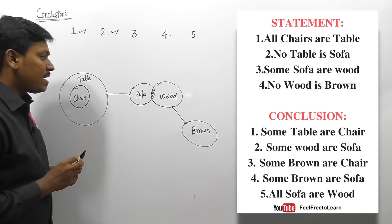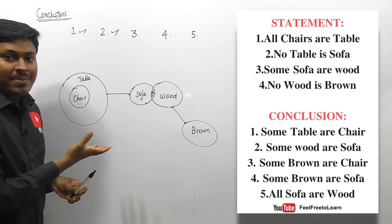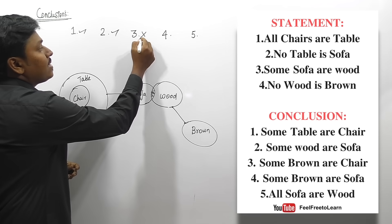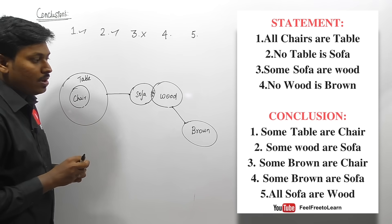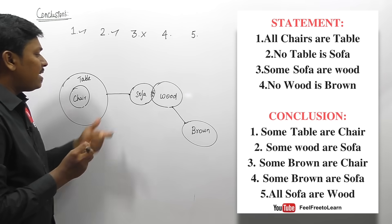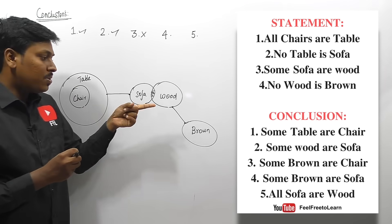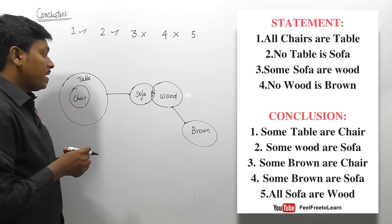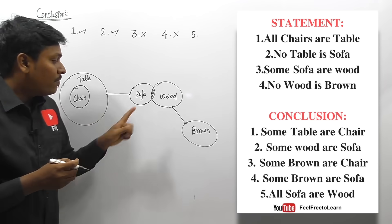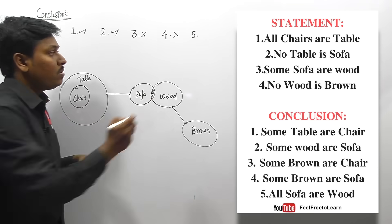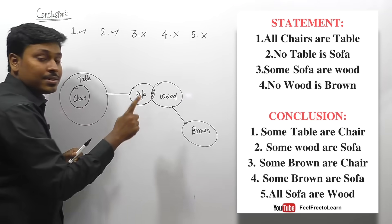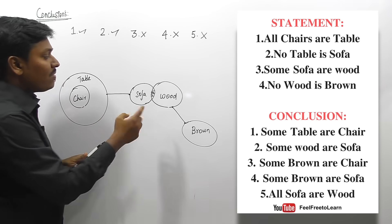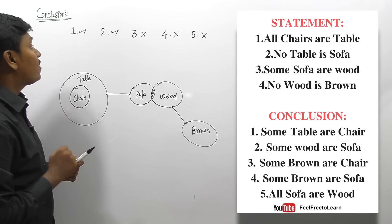Conclusion three: 'Some brown are chair'. There is no link between chair and brown — conclusion three is false. Conclusion four: 'Some brown are sofa'. No link between brown and sofa — conclusion four is false. Conclusion five: 'All sofa are wood'. Some sofa are wood is correct, but all sofa are wood is wrong — conclusion five is false. For question five, only conclusions one and two follow.